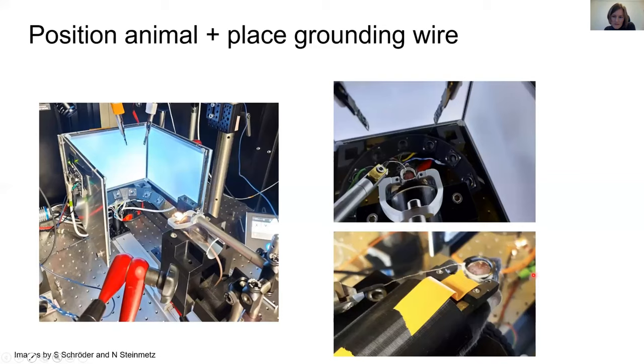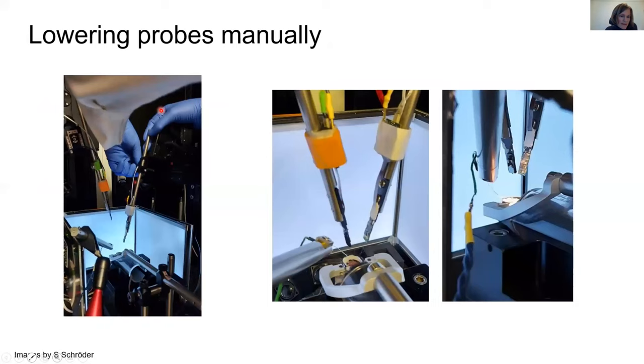Then you lower the probes manually, so just before we had fixed them, but they were too far away from the brain, so now you really lower them so that the tip of the electrodes is less than two centimeters away from the brain. This is just a view of how this should look like after that step.